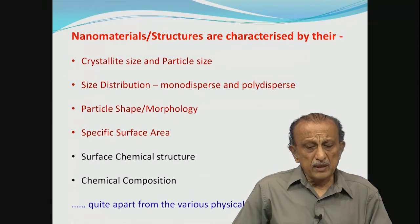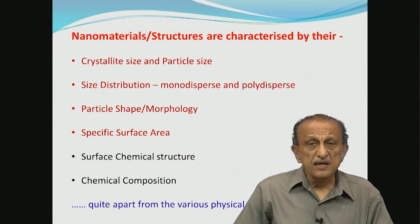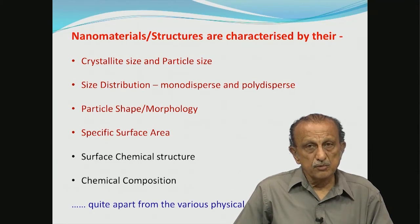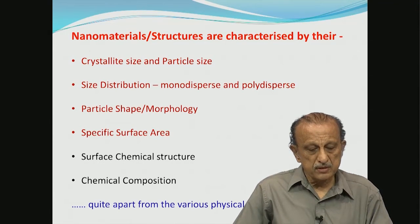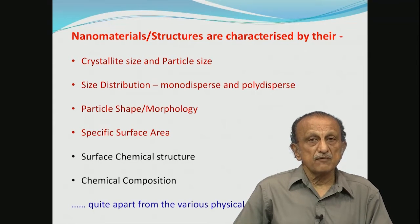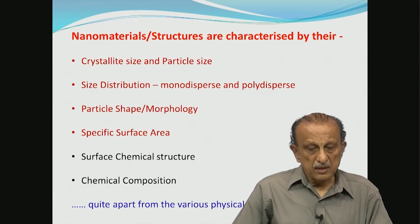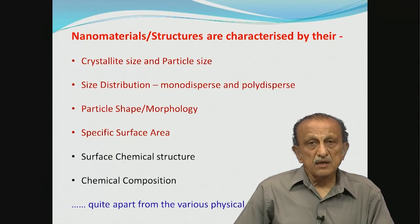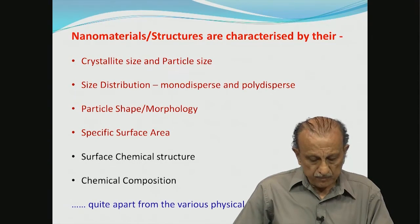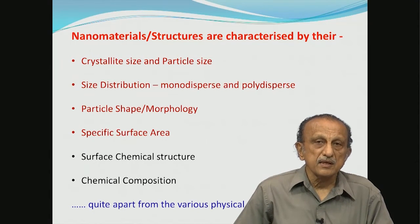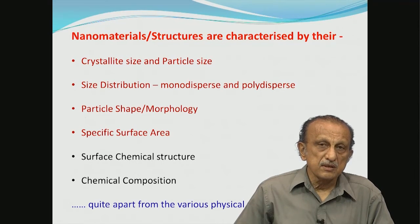Nanomaterials and structures are characterized by their crystallite size and particle size, by the size distribution — whether mono disperse or poly disperse — by particle shape and morphology, by the specific surface area, and by surface chemical structure and chemical composition. All these are characterization ways of nanomaterials, quite apart from the detailed physical properties characteristic of nanomaterials. So we deal with characterization of structure, size, and so forth.